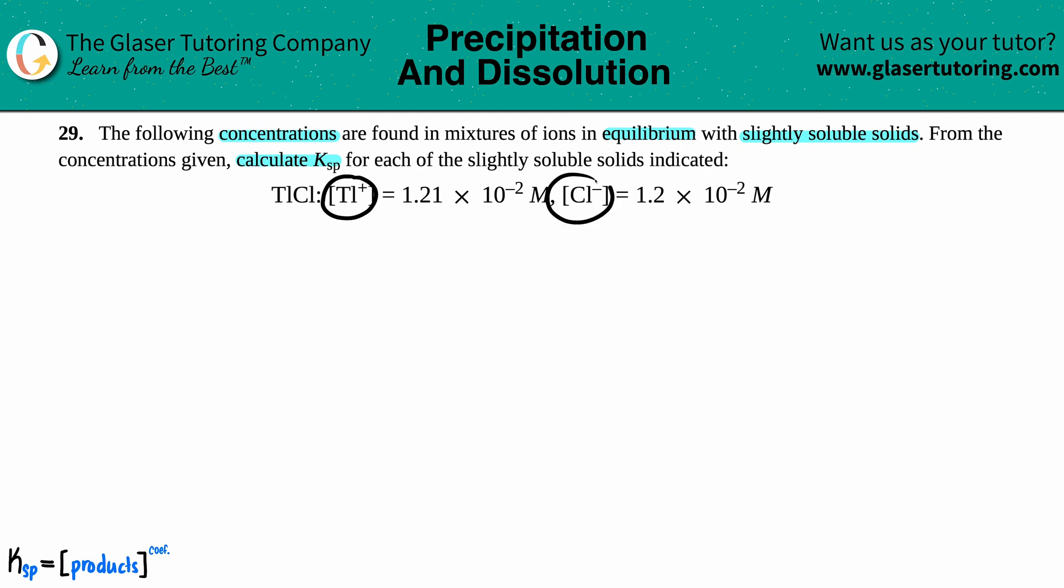But the ions are right here so I'm just going to copy, basically. So TlCl, that's the solid. This comes to equilibrium because we're dealing with the K value with the two ions. They told us that it was Tl+ and Cl-. They have charges so they're aqueous, and I'm looking to see if I need to balance and it's already balanced, so we're good.